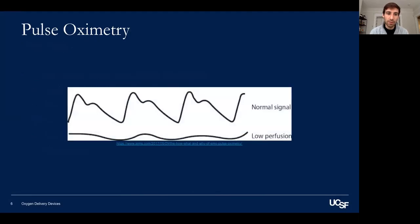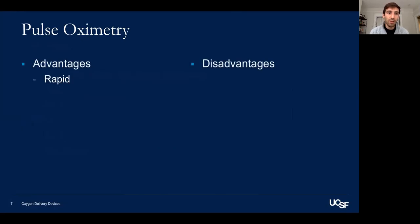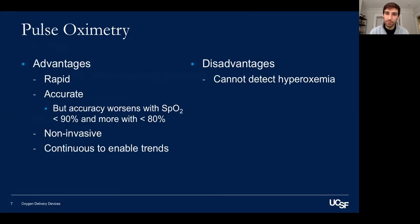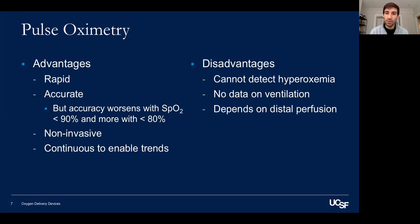The top waveform shows a dicrotic notch, which indicates adequate perfusion and an adequate signal. The bottom one shows low perfusion, which often indicates that the probe needs to be replaced or repositioned. The advantages are that it's rapid and accurate, although accuracy decreases as SpO2 drops. It's non-invasive and continuous, enabling trend monitoring. The disadvantages are that it cannot detect hyperoxemia, provides no ventilation or CO2 data, and depends on distal perfusion — states like hypotension and hypothermia affect this.